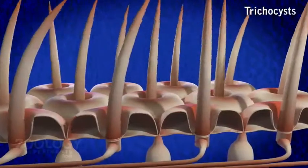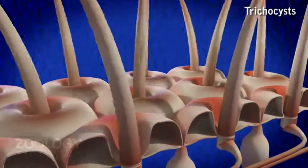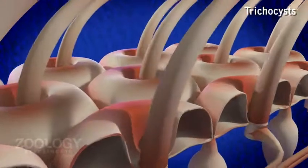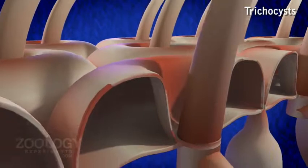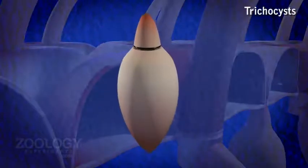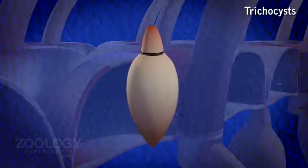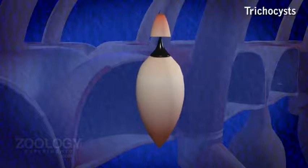5. Trichocysts: Trichocysts are peculiar rod-like or oval organelles present throughout the ectoplasm, alternating with basal bodies and oriented at right angles to the body surface. They measure about 4 microns in length. Each trichocyst consists of an elongated shaft and a terminal pointed tip called the spike,